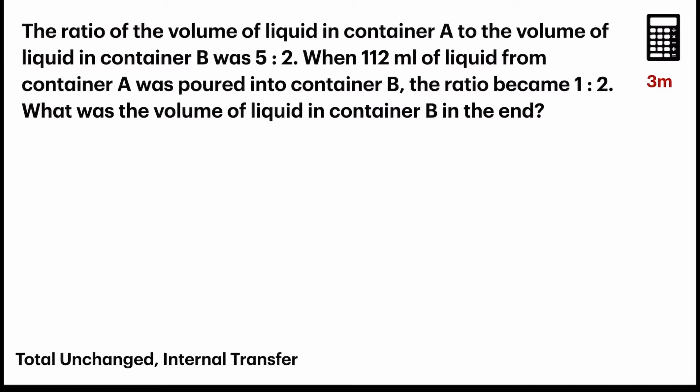The next question we have here is a question from paper 2, which allows you to use the calculator. And it's a 3 mark question. The ratio of the volume of liquid in container A to the volume of liquid in container B was 5 to 2. In every question, you have to look out for the keywords. Now, the next sentence is the key phrase. When 112 ml of liquid from container A was poured into container B. So, 112 ml. Then, for sure, you know that this is an internal transfer. And that tells me the total will be unchanged.